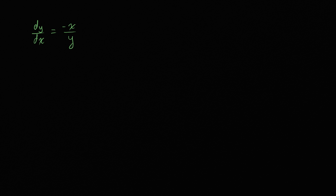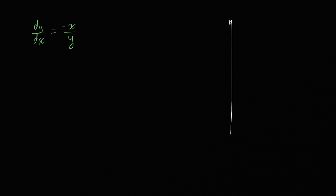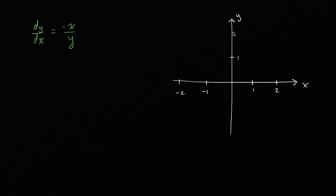To do that, what we could do is look at a coordinate plane. So let me draw some axes here — that's my y-axis and this is my x-axis. Let me mark this as one, two, negative one, negative two on the x-axis, and one, two, negative one, and negative two on the y-axis.